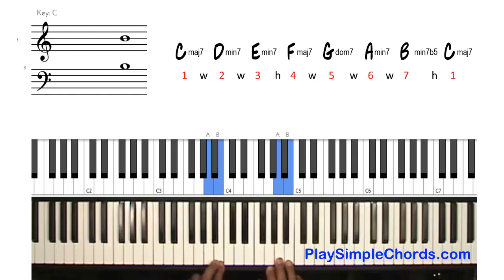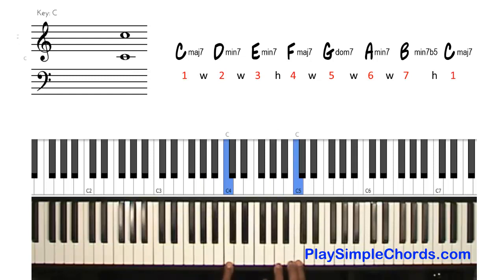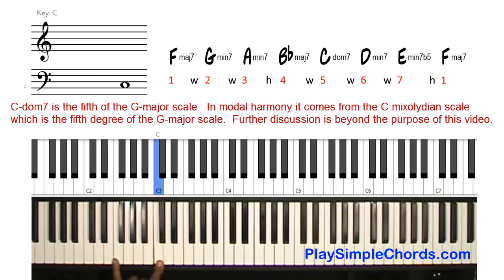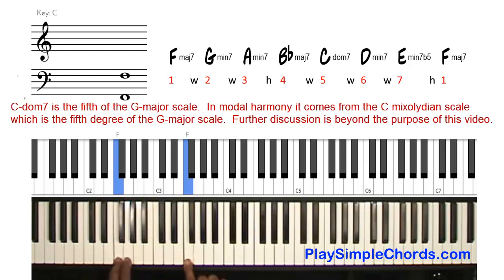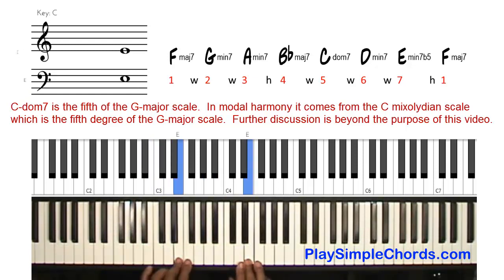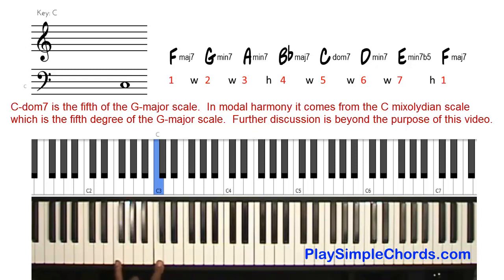G is five, A is six, B is seven, and then back to C. So the five in C is G. But we're not going to show the altered dominant on the note G — we're going to do it on the note C, which is actually the fifth note in the key of F. So F is one, G is two, A is three, B flat is four, C is five, D is six, E is seven, and then back to F. So we're looking at C as the fifth note in the key of F, not as the one in the key of C.